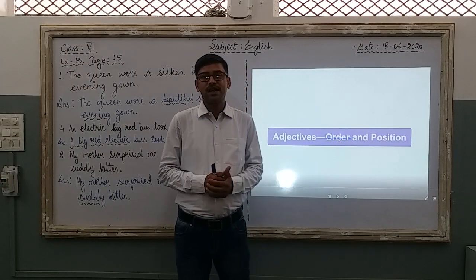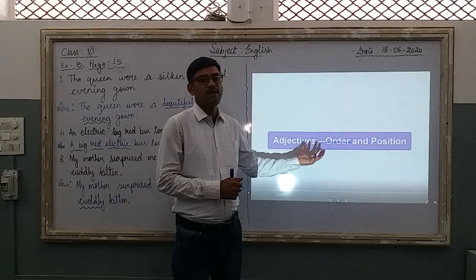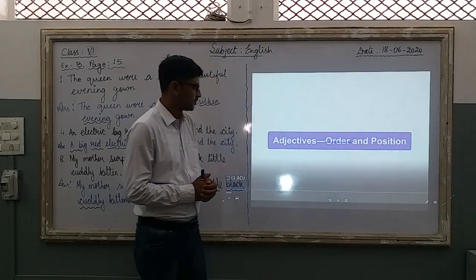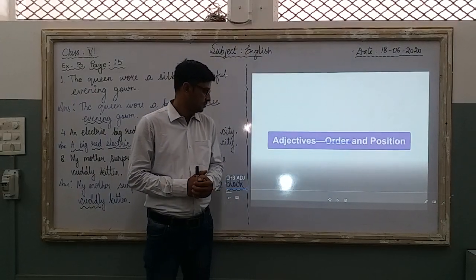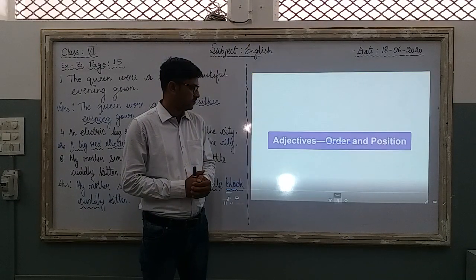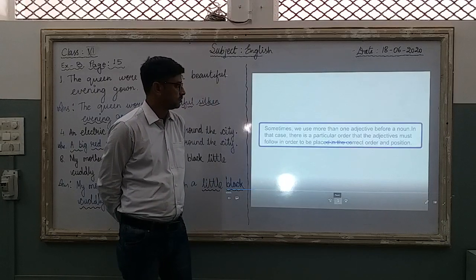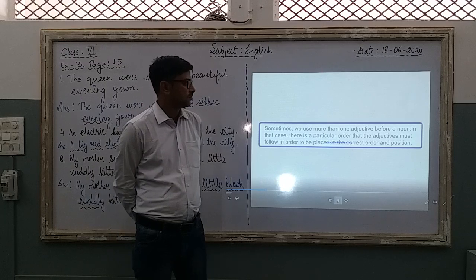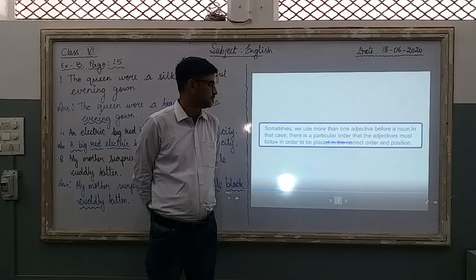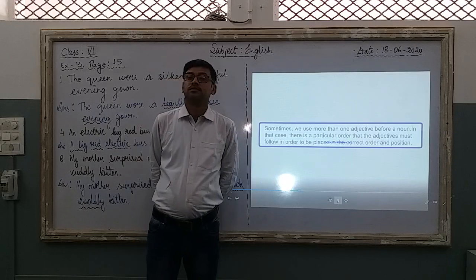Before we start the chapter, you will see a short video and you will try to understand what the video is trying to tell us. Adjectives order and position — sometimes we use more than one adjective before a noun. In that case, there is a particular order that the adjectives must follow in order to be placed in the correct order and position.